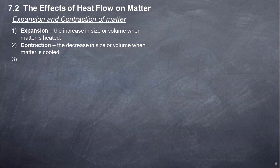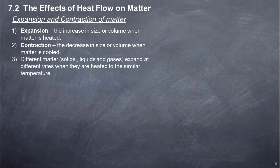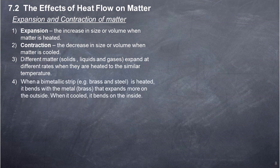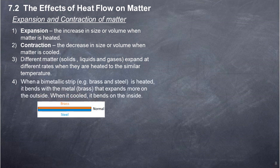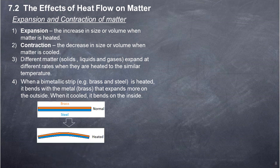Different matter — solids, liquids, and gases — expand at different rates when they are heated to a similar temperature. When a bimetallic strip, for example brass and steel, is heated, it bends with the metal that expands more (brass) on the outside. When it is cooled, it bends on the inside.